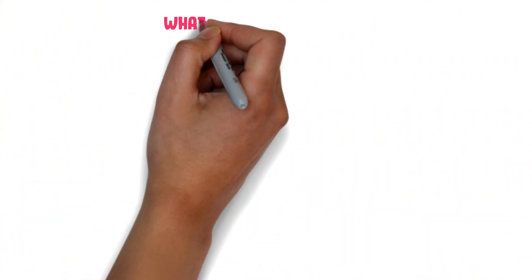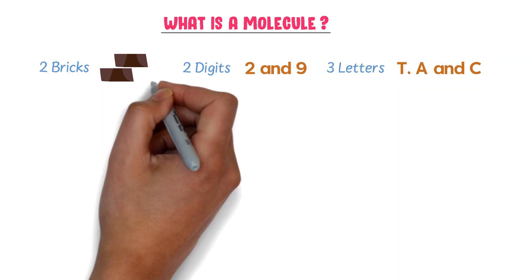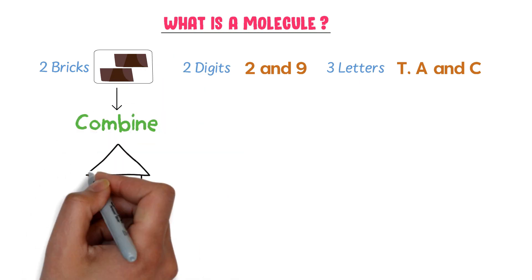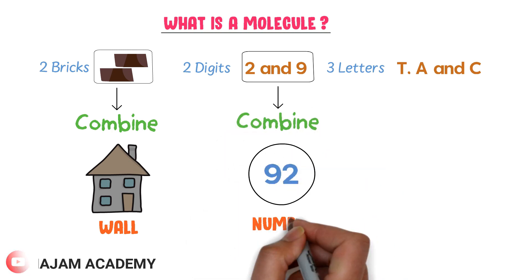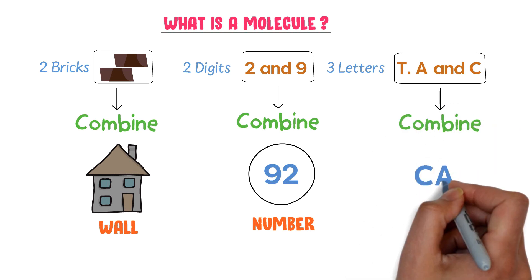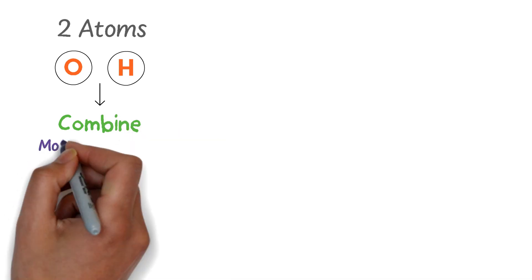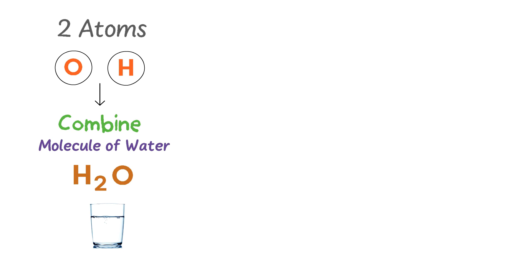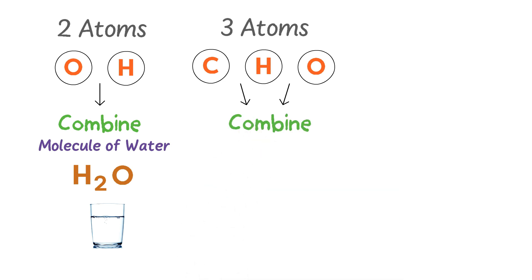Now, what is a molecule? Consider two bricks, two digits (two and nine), and three letters (C, A, T) — these are all different smallest units. If I combine bricks I get a wall; if I combine digits nine and two I get the number 92; if I combine three letters C, A, T I get the word 'cat.' Similarly, if I combine two atoms — oxygen and hydrogen — I get a molecule of water, H2O.